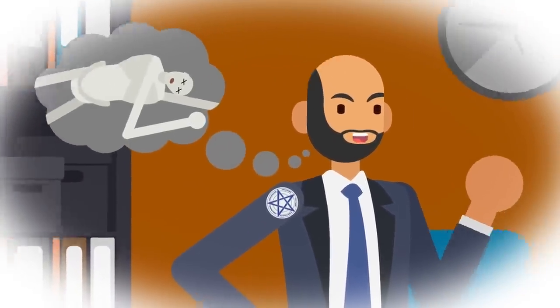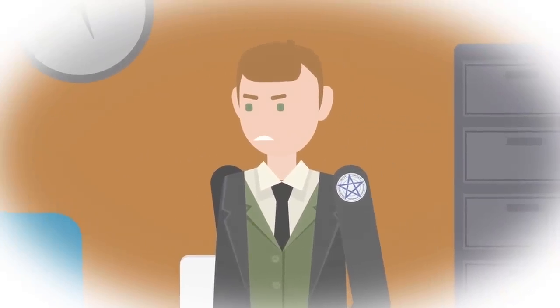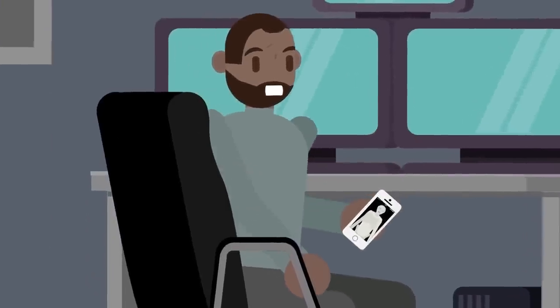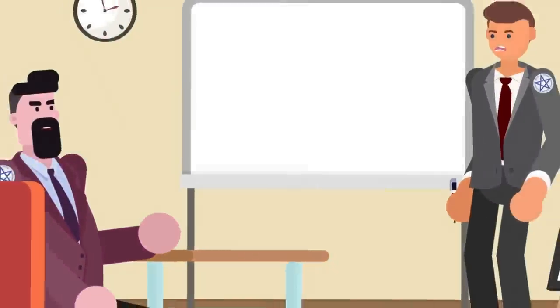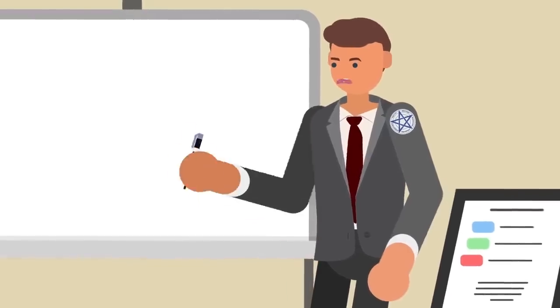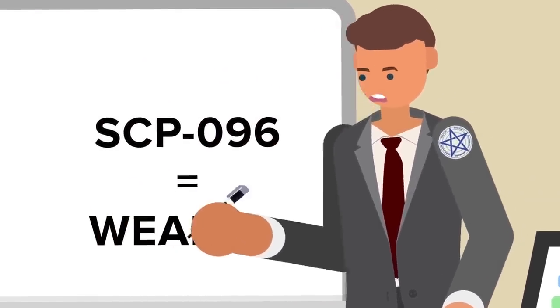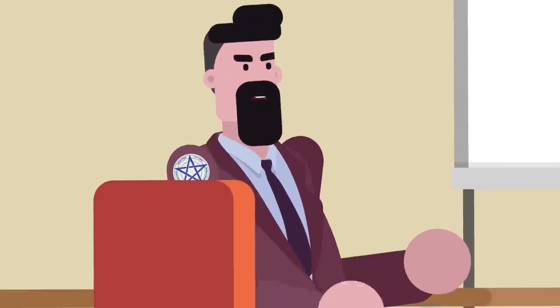The objective was simple: kill SCP-096, also known as the Shy Guy. An anomalous entity with a long, disproportionate human body that could use impossible speeds to kill anyone that looked at its face, even through an image. That was what worried the GOC. It seemed all too easy for SCP-096 to be used as a weapon, especially for assassinations.